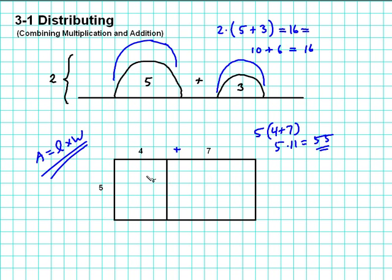But there's another way to find the area, which is to find the area of each one of these and then add them up. Notice this area is 5 times 4. And this area would be 5 times 7, because the width still here is 5. 5 times 4 is 20. 5 times 7 is 35. If I add 35 and 20, again, I get 55.